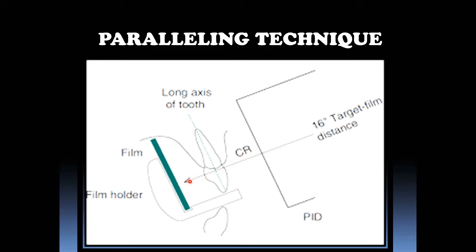What is the concept here? The x-ray film should be placed in such a way that it should be parallel to the long axis of the tooth. Hence it is called a paralleling technique. And the central ray should be at the right angle to the long axis of the tooth and the film.